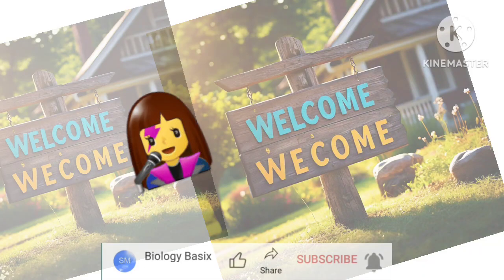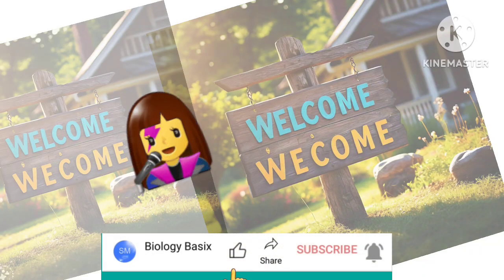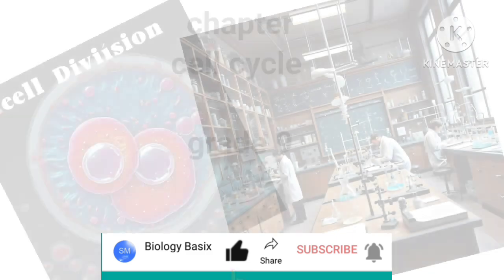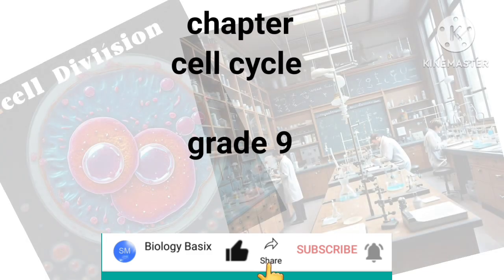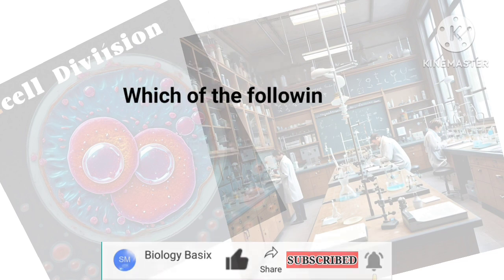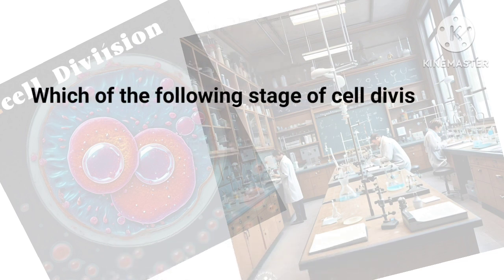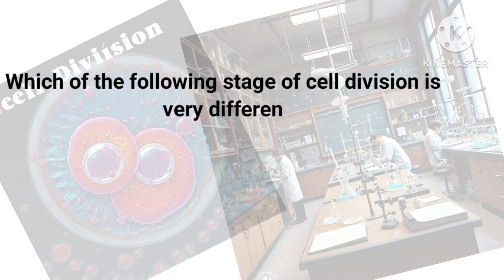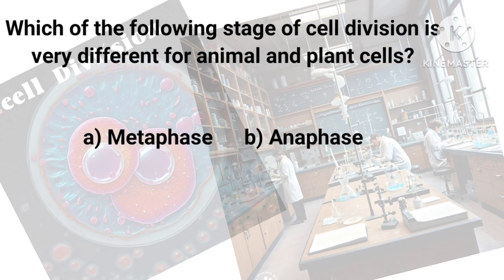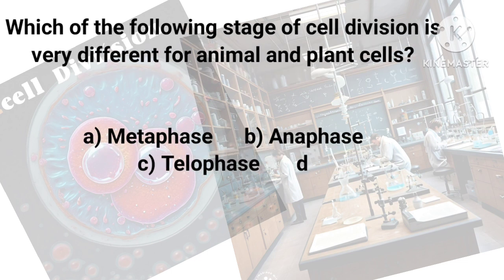Assalamu alaikum and welcome to the channel. Today's MCQ is taken from the chapter cell cycle of grade 9. Let's try it out: which of the following stages of cell division is very different for animal and plant cells?